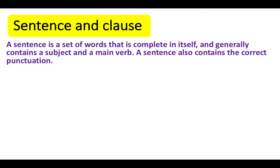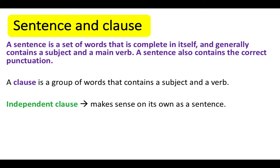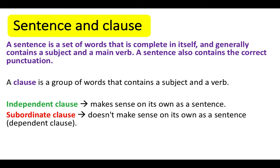A sentence is a set of words that is complete in itself and generally contains a subject and a main verb. A sentence also contains the correct punctuation. A clause is a group of words that contains a subject and a verb. An independent clause is a type of clause that makes sense on its own as a sentence. A subordinate clause doesn't make sense on its own as a sentence and is often referred to as a dependent clause.